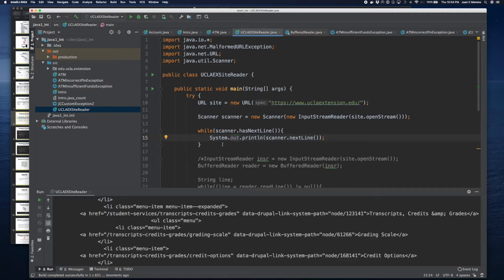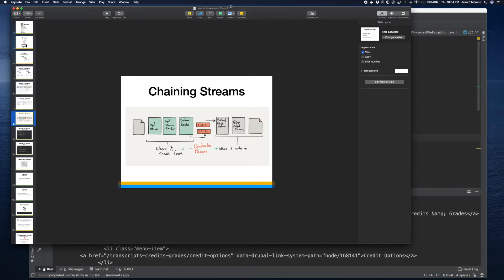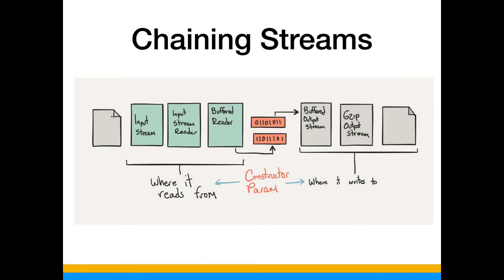One of the things that's beautiful about streams is that you can chain them together. Once you chain them, you can create something powerful like this URL reader that we just wrote — where we want to convert it from a URL into a file, and not only a file, but a compressed GZIP file.